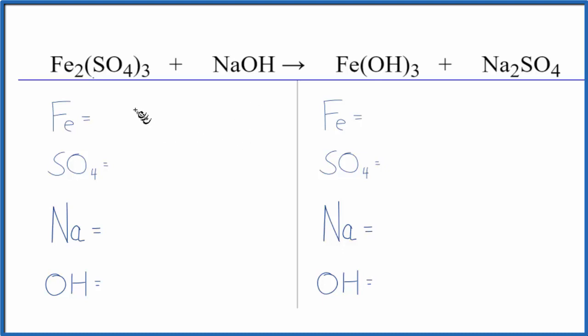So let's count the atoms up on both sides. We have two iron atoms, and here's the trick. We have sulfate here and sulfate here. It's a polyatomic ion. It stays together in the chemical reaction. We're going to count this as just one item, so I have one sulfate ion times three.